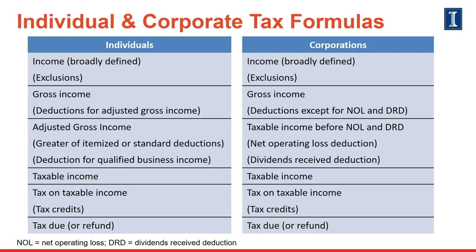Let's now compare the individual and corporate income tax formulas. You can easily see that the overall structure of the two formulas is quite similar. For instance, both formulas begin with the all-inclusive concept of income under Code Section 61A. Each formula then applies deductions to arrive at taxable income, which is then used to determine tax liability. From there, tax credits and prepayments are applied to compute the net amount due or refunded. At a more detailed level, however, there are obvious differences in the types of deductions.